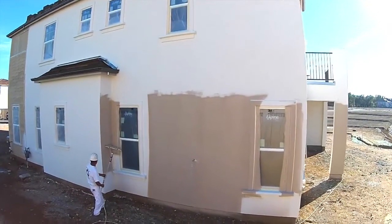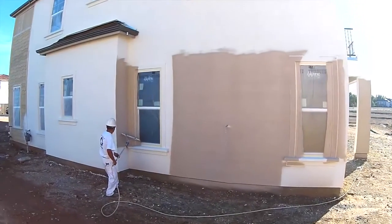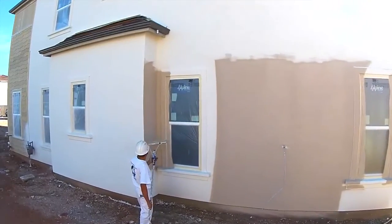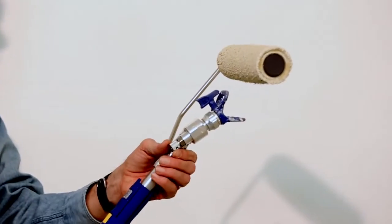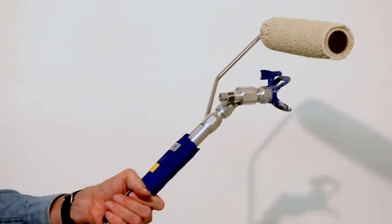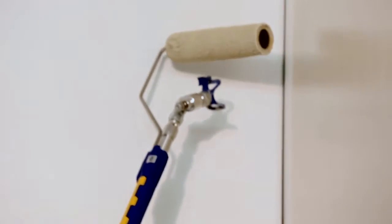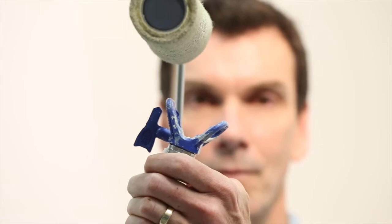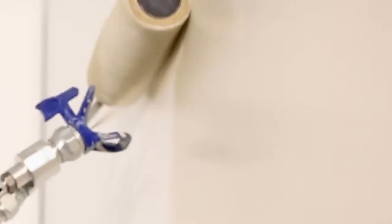The spray extension also allows you to spray corners to avoid some of the cutting in that is normally required with a brush. To avoid spraying the roller, angle the spray head away from the roller. Spray the corner, readjust the spray head, and continue jet rolling.